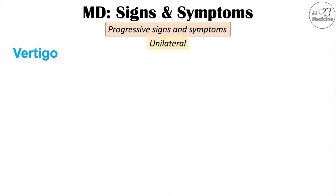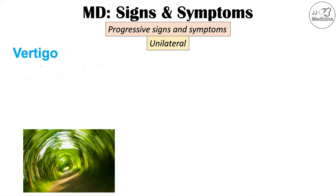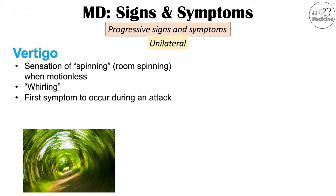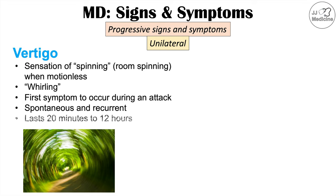Meniere's disease is an inner ear disorder involving recurrent spontaneous episodes of vertigo. Vertigo is a sensation of spinning or the room spinning when the person is motionless — even if sitting or standing still, it feels like the room is spinning. It can feel like a whirling sensation and is often the first symptom during an attack. This is the hallmark symptom, and it's spontaneous and recurrent. Notably, each episode lasts 20 minutes to upwards of 12 hours, making it very debilitating for patients.